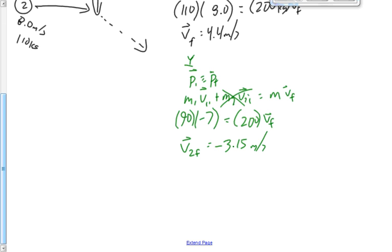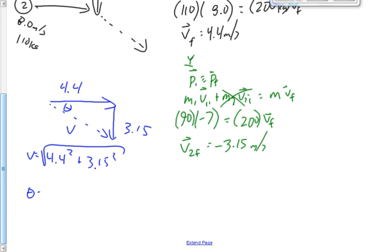What do we do now? We've just solved two fairly easy problems. Tom, what do we do now? Draw a right angle triangle. Combine them. This is 4.4. This is 3.15 downwards. This is the speed we want. It's the square root of 4.4 squared plus 3.15 squared. In the angle, we need the angle because momentum's a vector. We need the direction. Or velocity, I should say, is a vector. We need the direction. It's going to be found by the inverse tan function of opposite over adjacent.